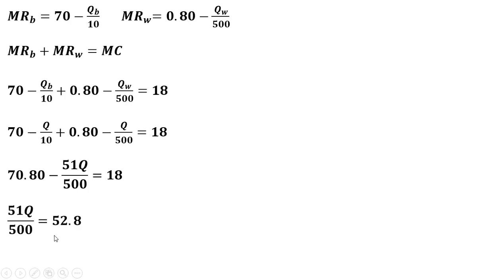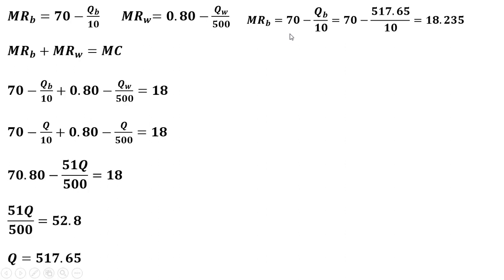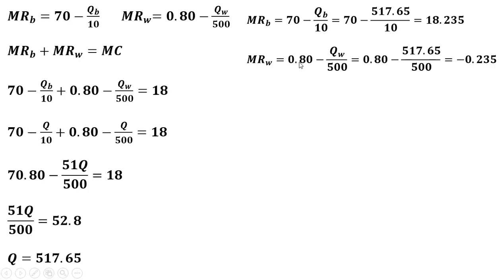Solving for Q, we get Q equals 517.65. We then evaluate each marginal revenue equation at Q equals 517.65. For baseball bats, if we produce 517.65 — say 518 baseball bats — marginal revenue would be positive. We also plug this 517.65 into the marginal revenue equation for wood chips.